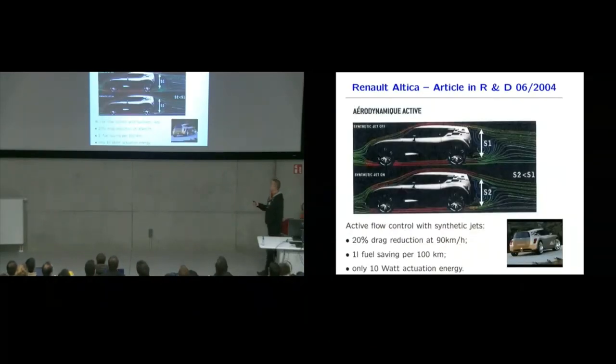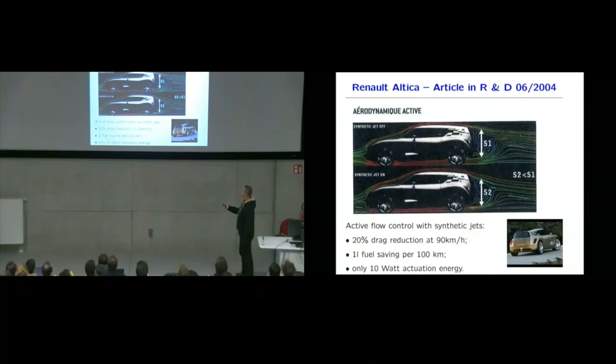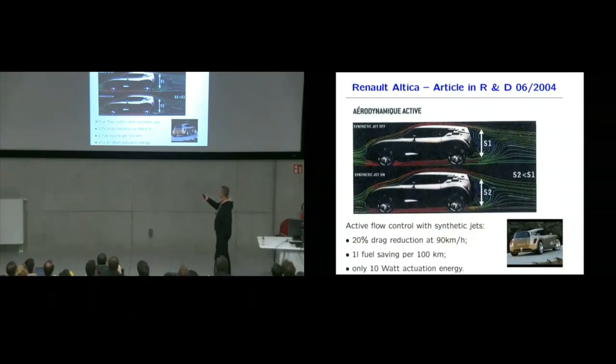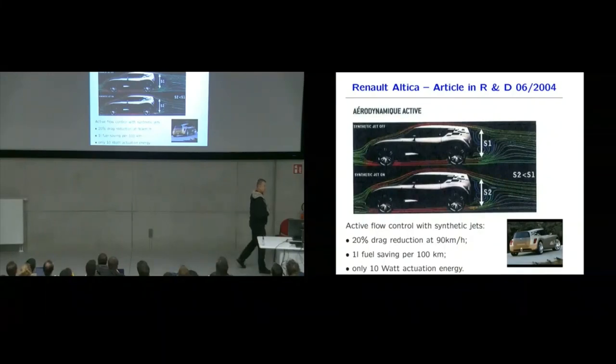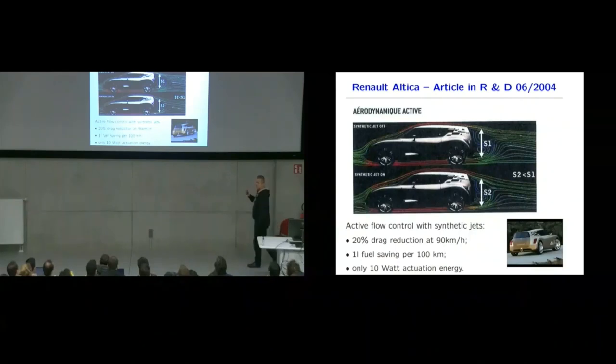If you go to a magazine called Research and Development in 2004, you see this car with an experiment with actuation off. So the wake has a certain shape. Now you have zero net mass flux blowing here. There's a change in the wake structures. What is most important, you're going to gain something like 20% drag reduction at 90 kilometers per hour.